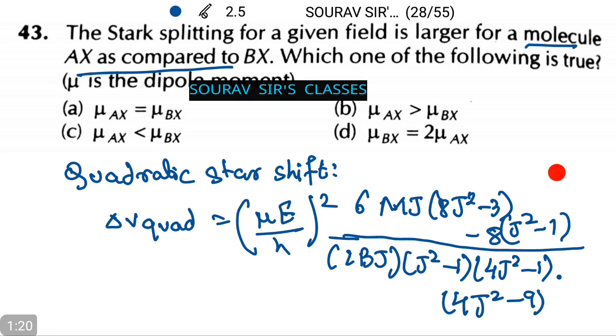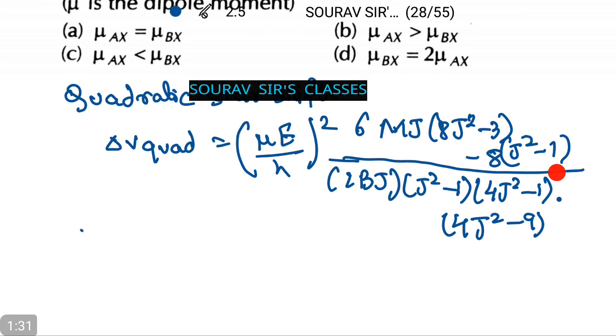Minus 8j² - 1 whole divided by 2Bj × (j² - 1) × (4j² - 1) by 4j² - 9. That is stark splitting is directly proportional to μ².